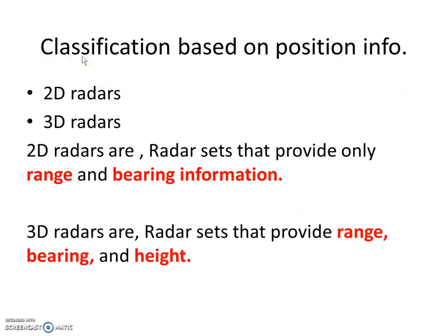Classification of air defense radar is based on the position information — meaning whatever position information is given by the radar to the system. We divide them into two types: 2D radars and 3D radars. 2D means two-dimensional and 3D means three-dimensional. 2D radars give information about two things: range and bearing. So it is called a two-dimensional radar.